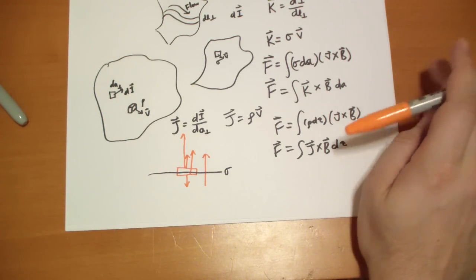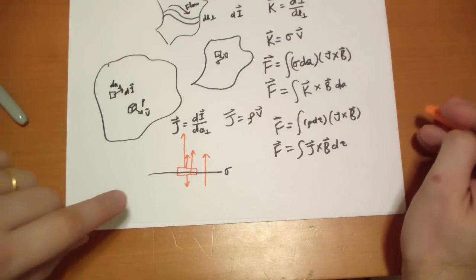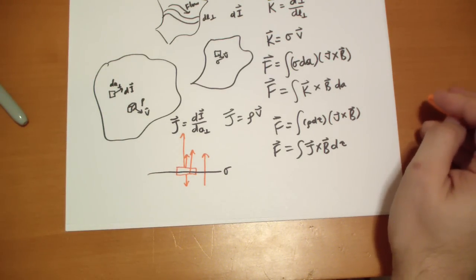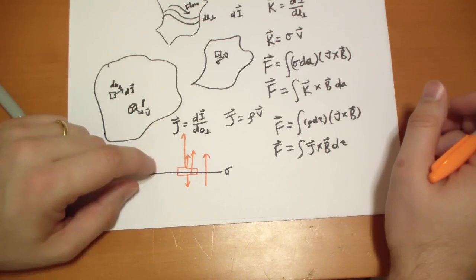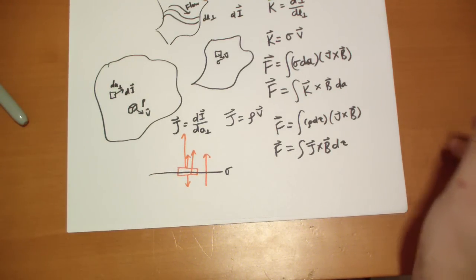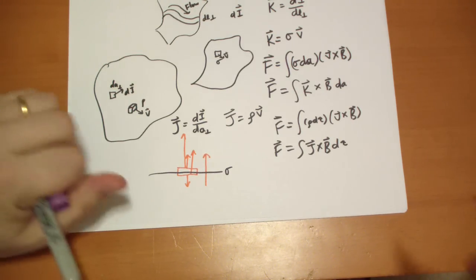And so really when you're doing this, the magnetic field, because current creates a magnetic field, the magnetic field at the surface when you have moving charges also suffers a discontinuity. So you have to keep that in mind. And so this B right here,